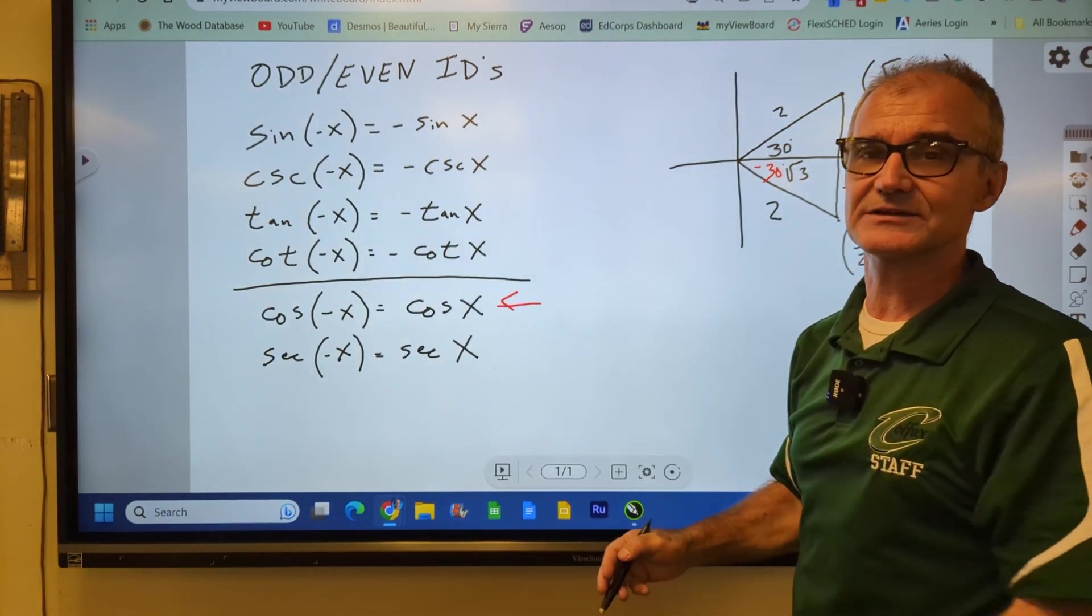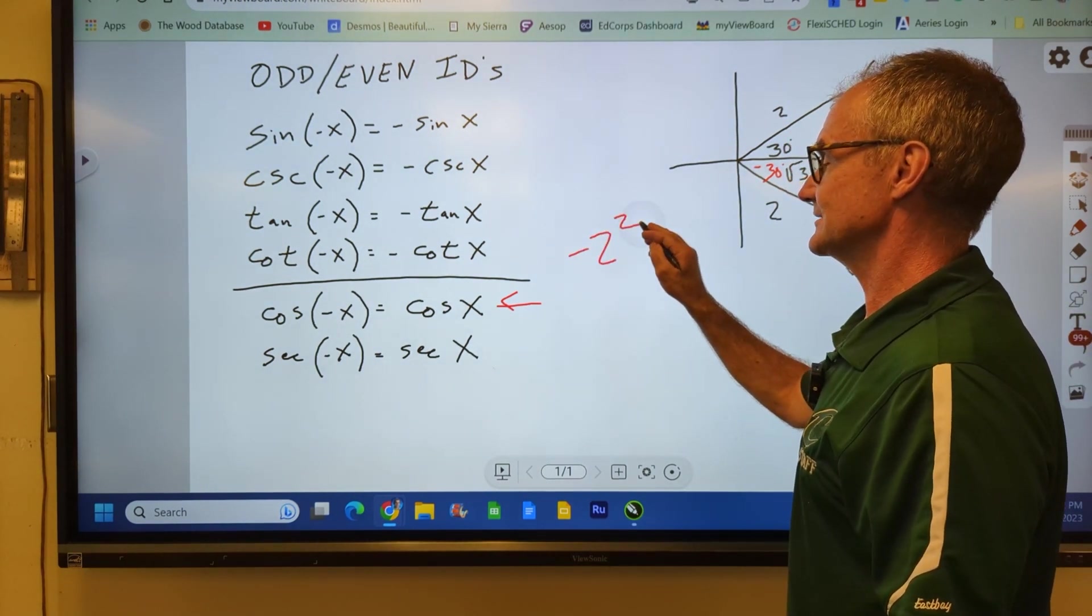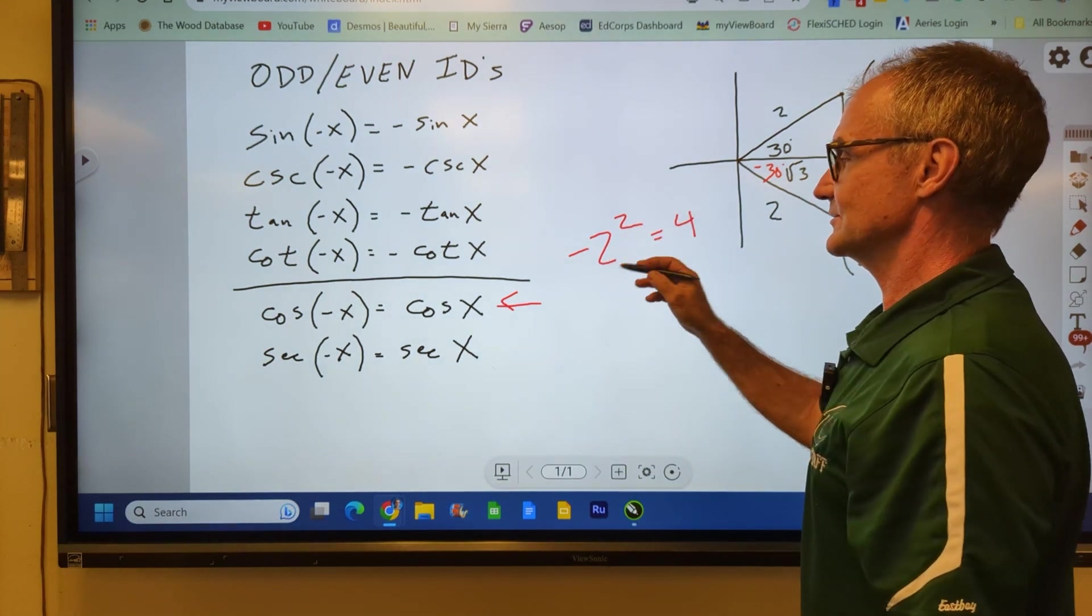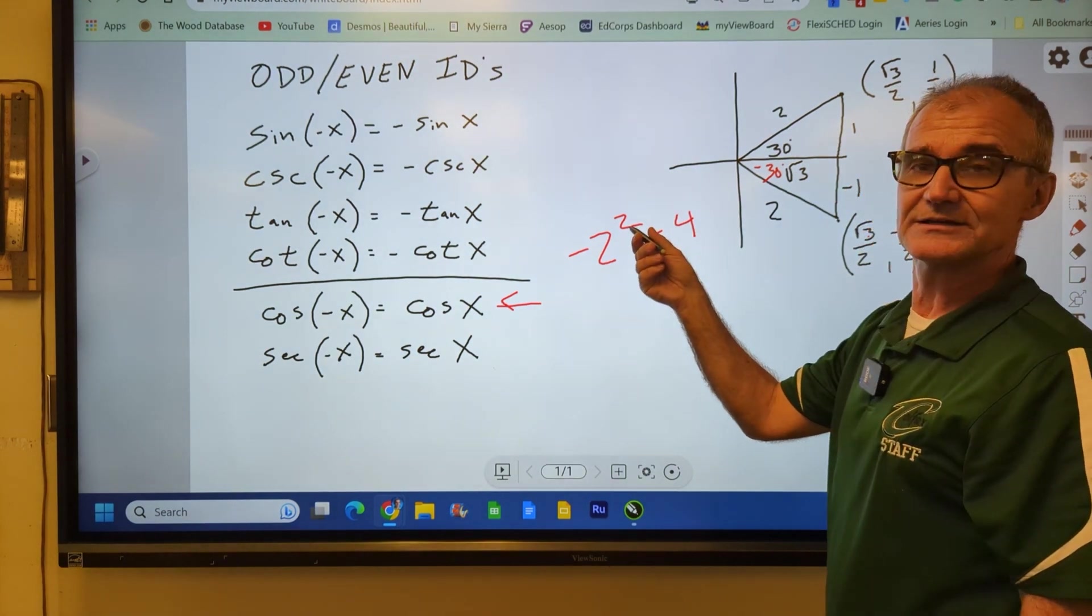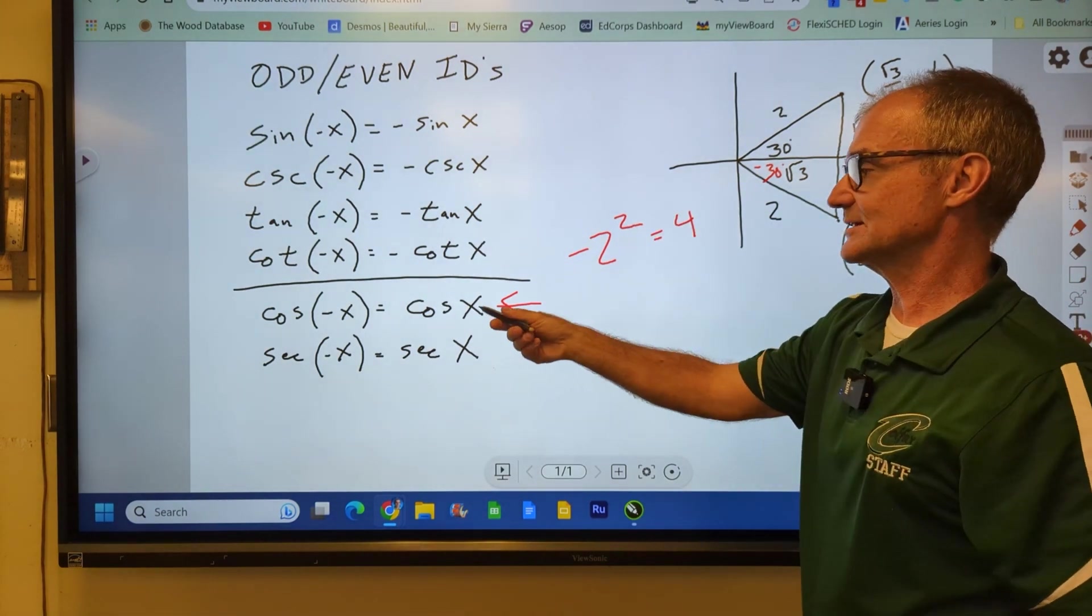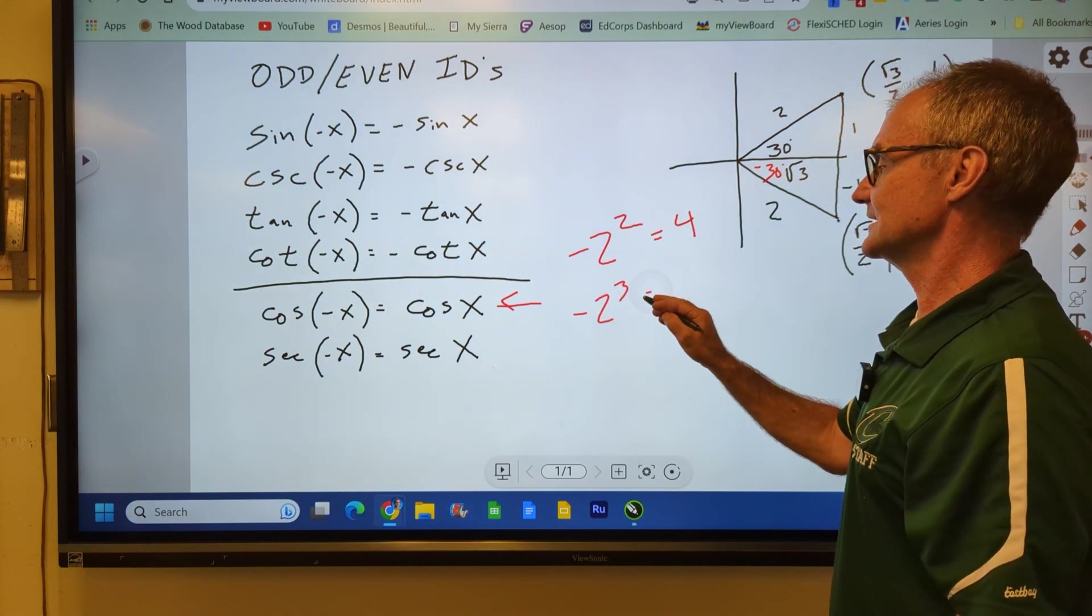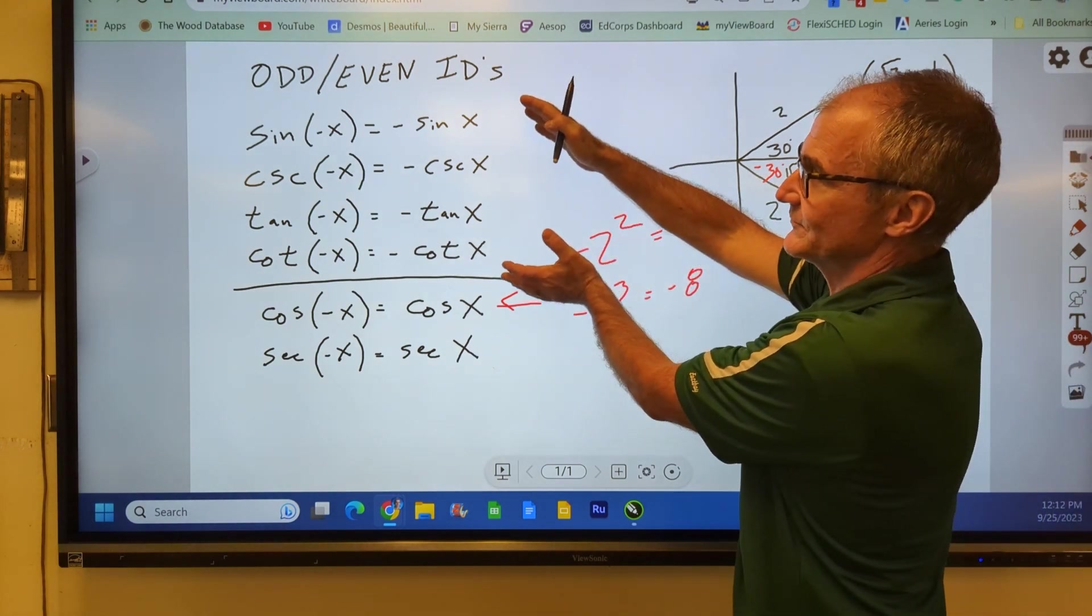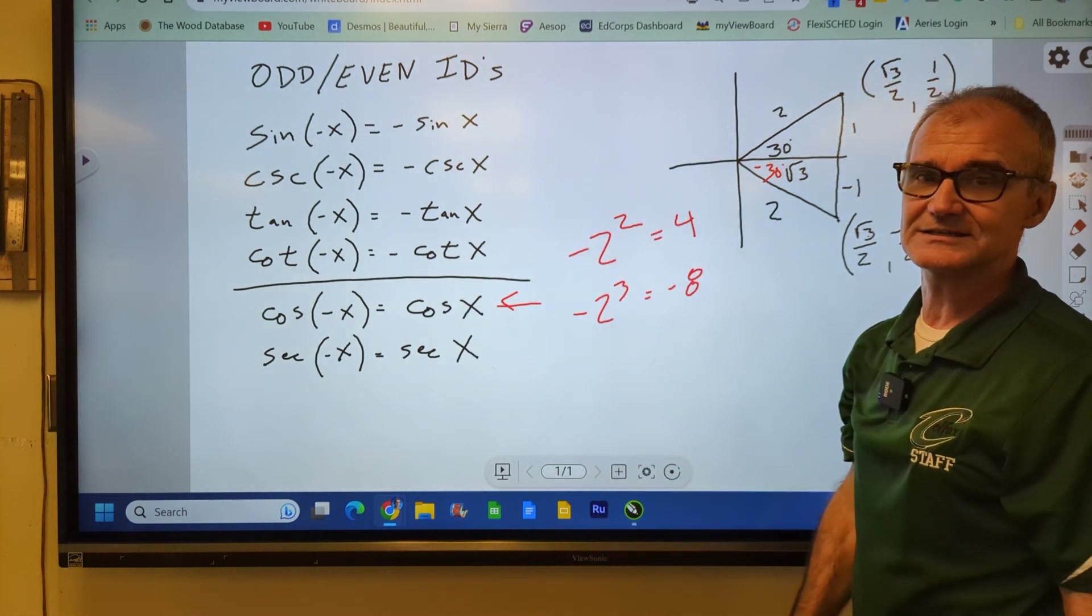Where does that term odd even come from? If I have a value like negative 2 and I square it, an even number, it's going to become 4. So if it's negative and it becomes positive with an even exponent, that's why these are called even. If I had negative 2 to the third, an odd exponent, that would be equal to negative 8. It stays negative. So those are our four odd trig identities and these are our two even identities.